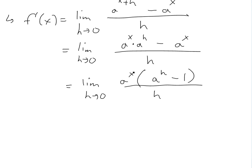So now since this doesn't have an h inside, you could just take it out of this whole limit. So you just get a^x, because the h doesn't affect it at all, so just take it out, and then this is a^h minus one divided by h.